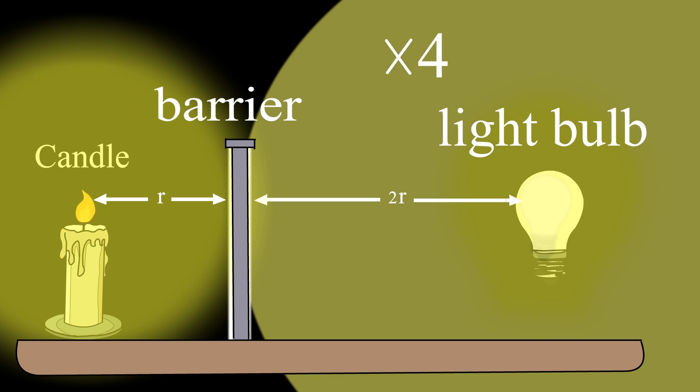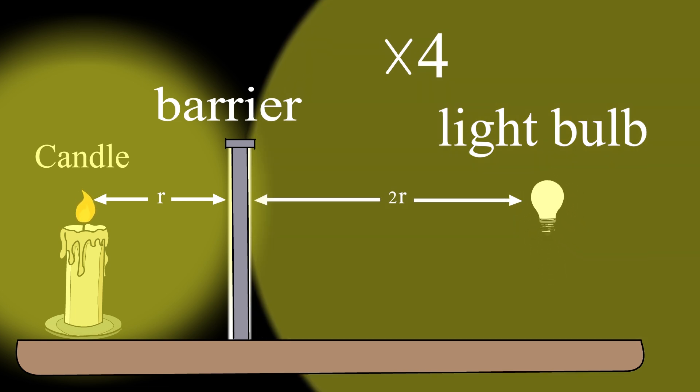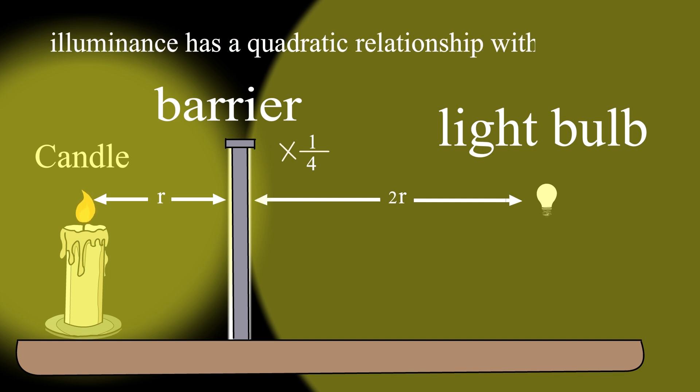But if the light intensity of the two sources is equal, the illumination of the surface of the barrier facing the lamp — which is at twice the distance of the candle from the barrier — will be equal to one quarter of the illuminance of the surface of the barrier facing the candle. This shows that illuminance has a quadratic relationship with distance.